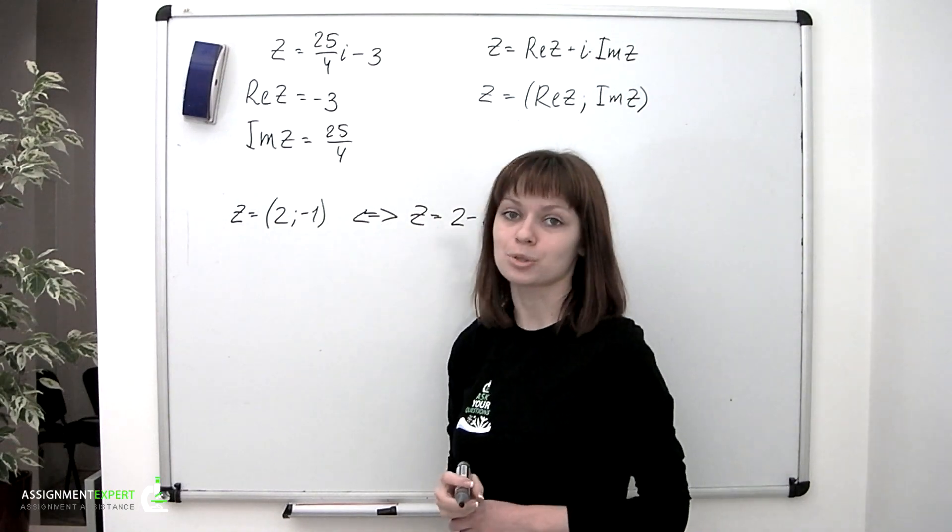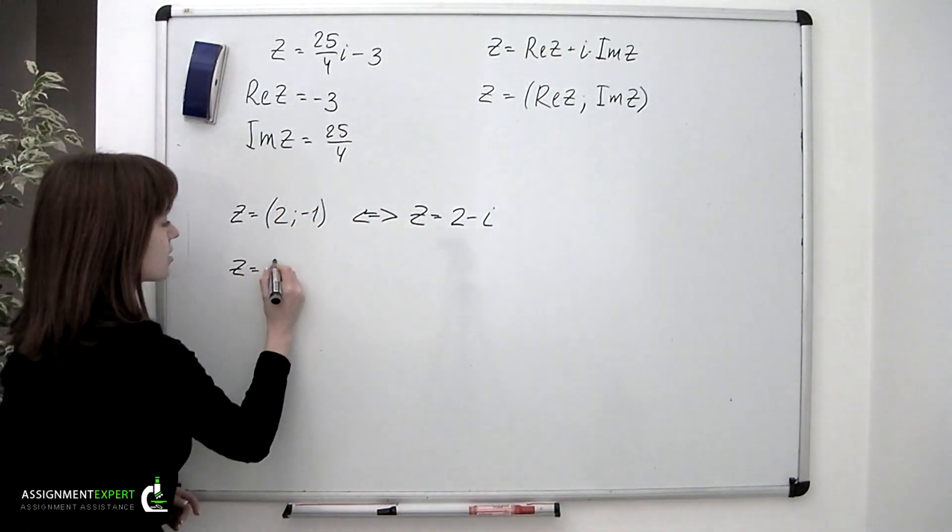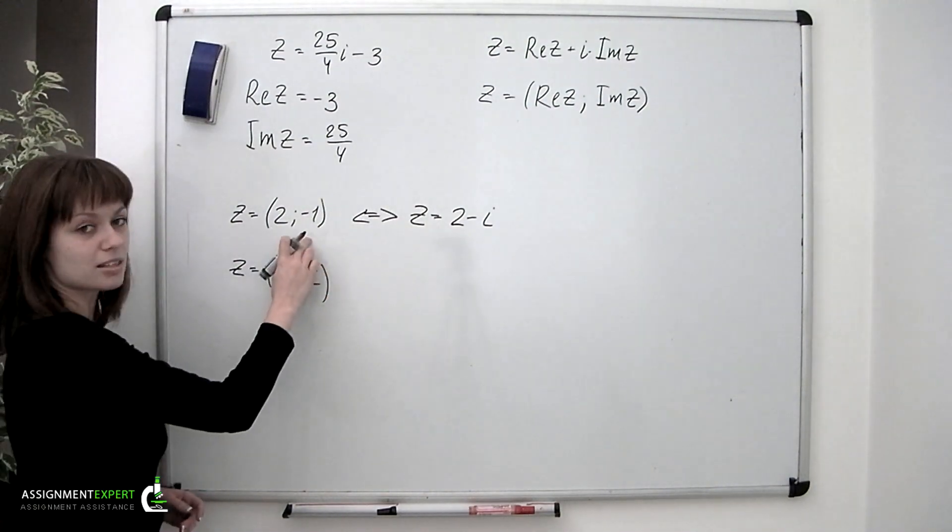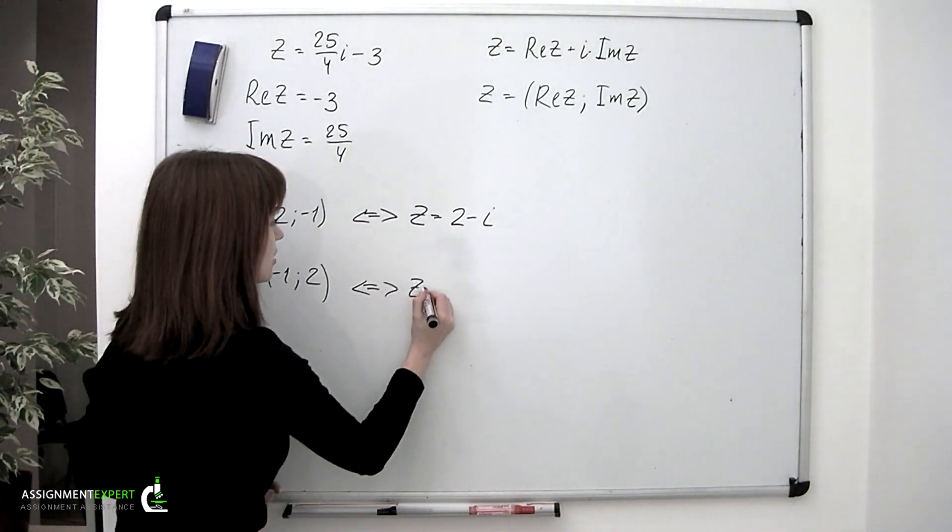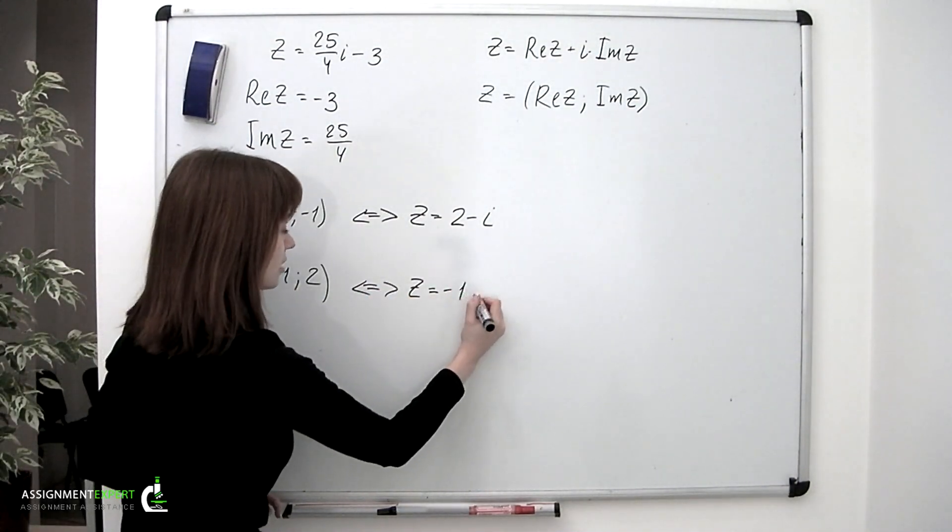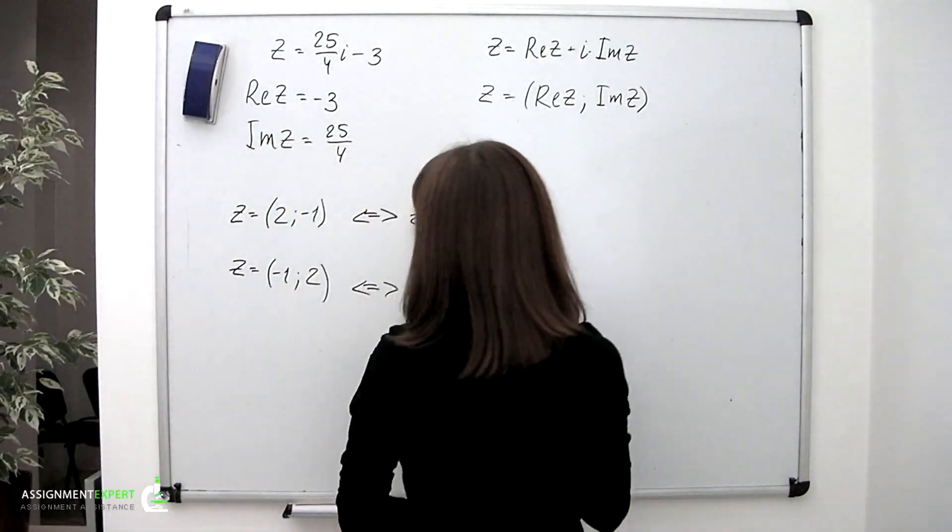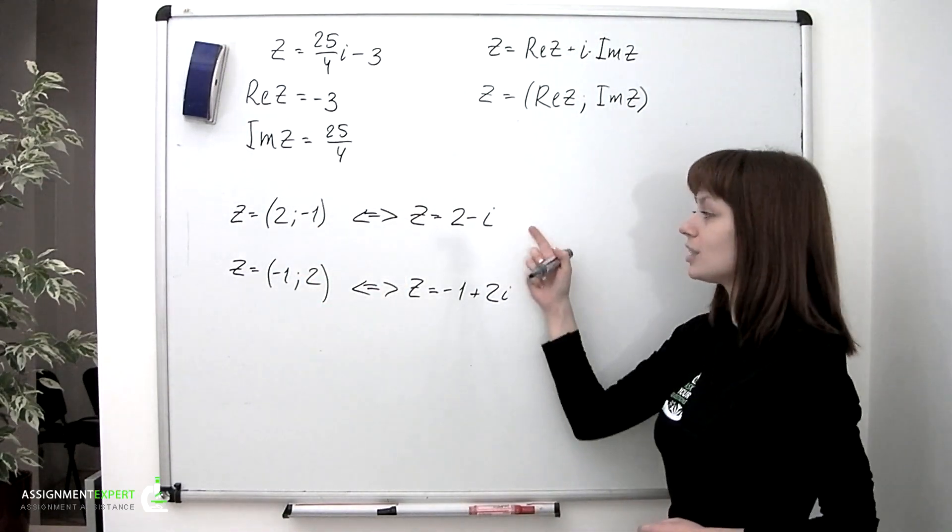Let's see what happens if we do switch them. So suppose that this time we'll have z = (-1, 2) instead of (2, -1). And that is another way of notation for z = -1 + 2i. So this seemingly minor change resulted in a completely different number.